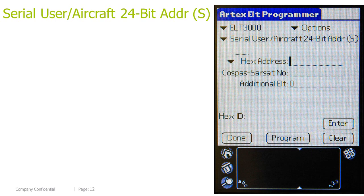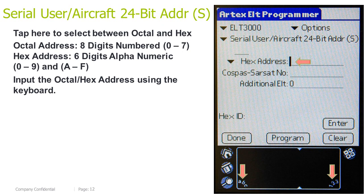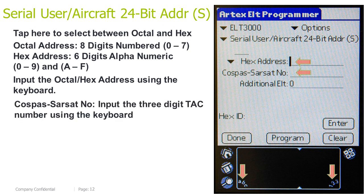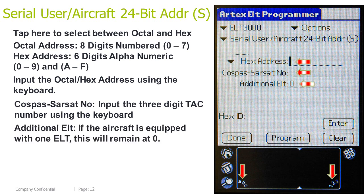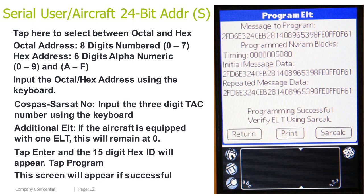Serial user, aircraft 24-bit address short. Tap here to select between octal and HEX. Octal address: 8 digits, numbers 0–7. HEX address: 6 digits, alphanumeric, 0–9 and A–F. Input the octal/HEX address using the keyboard. Input the 3-digit TAC number using the keyboard. Additional ELT: if the aircraft is equipped with one ELT, this will remain at 0; if the aircraft has additional ELTs, such as those found in life rafts, this can be changed between 1 and 3. Tap Enter and the 15-digit HEX ID will appear. Tap Program. This screen will appear if successful.